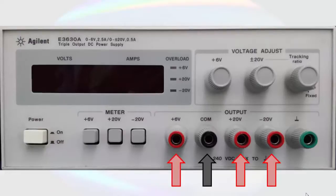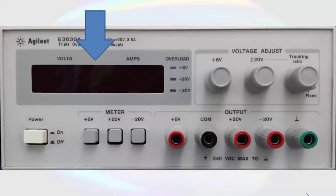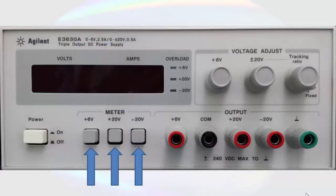Let's briefly go over the rest of the front of the display. Here we have the power supply's display. This will display the electric potential in volts and the current in amps of whichever channel is selected by the meter buttons. The meter buttons do not affect the output voltage of the supply. They only change what is displayed on the indicator.